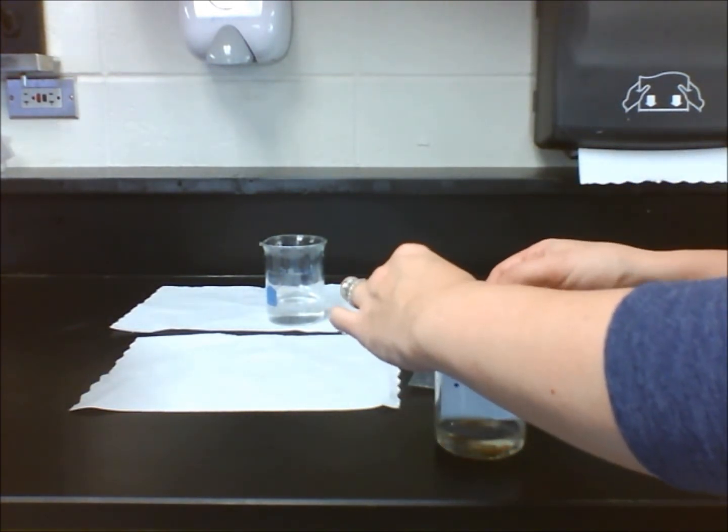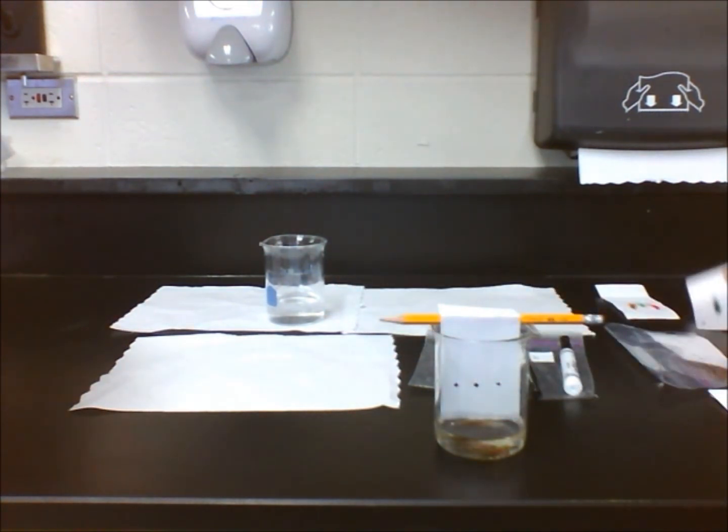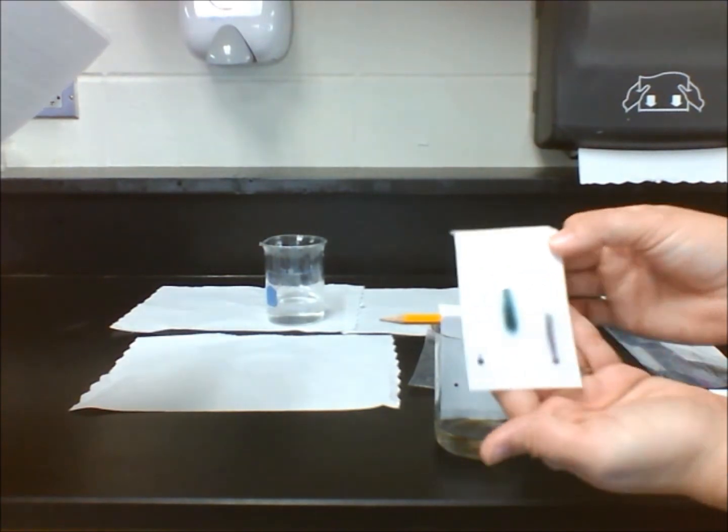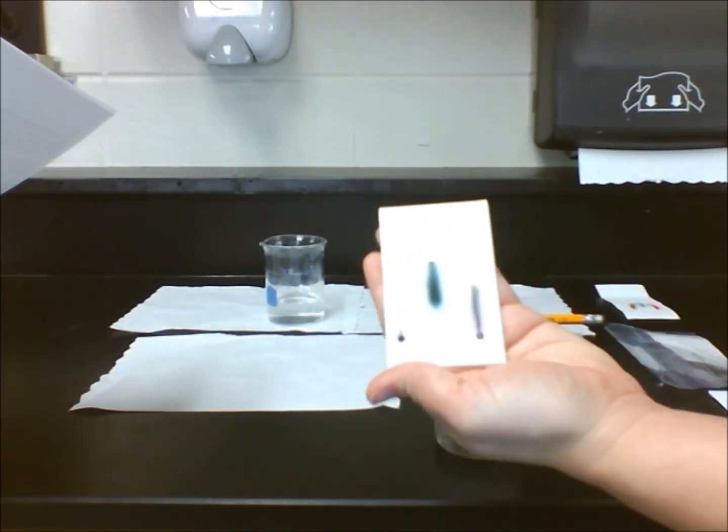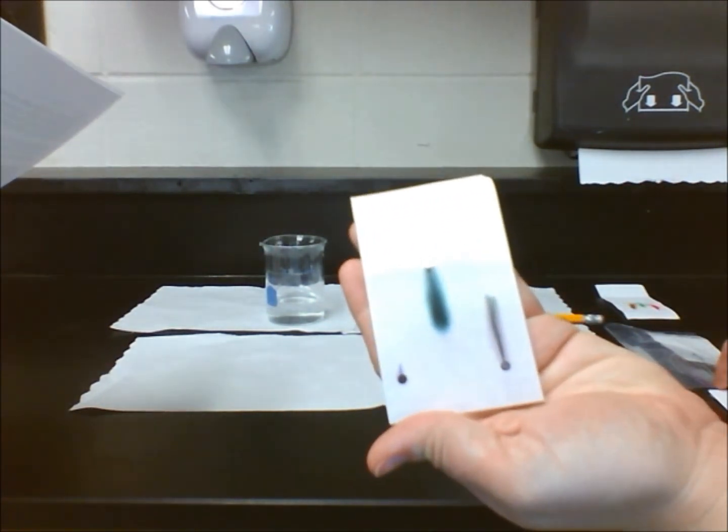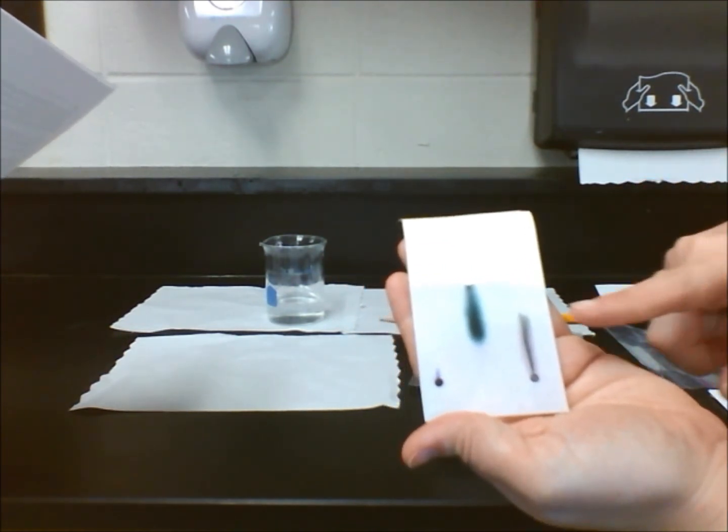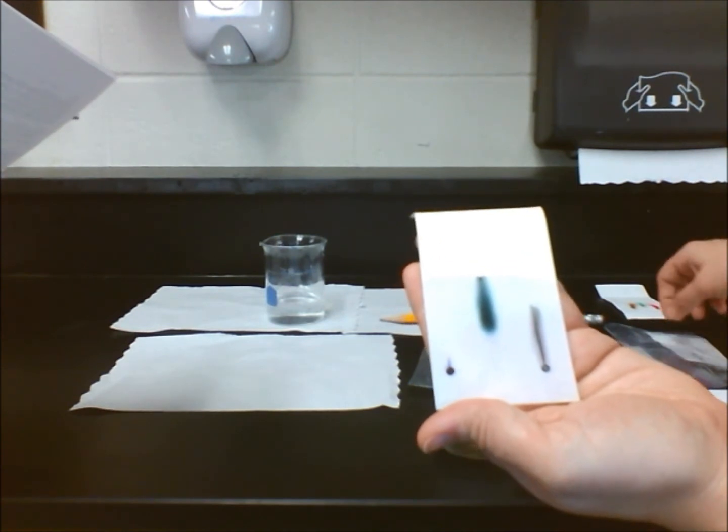Pen C is soluble and it's composed of a bluish solute. Pen D is also soluble but it's composed of a purplish solute. Its solubility rate is a bit faster than pen C's. Plus, it makes a very unique, thinly shaped pattern when traveling up the chromatography paper.